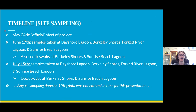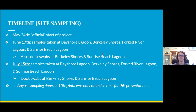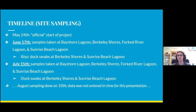For a general timeline of site sampling: we started officially on May 24th, with our two primary sampling dates on June 17th and July 15th. We sampled all four sites — Bayshore Lagoon, Berkeley Shores, Forked River Lagoon, and Sunrise Beach Lagoon — on both dates. Dock swabs were also taken at Berkeley Shores and Sunrise Beach Lagoon on both dates. We went out again on August 10th for a third sampling date, but there was not enough time to process and compile that data for this presentation.